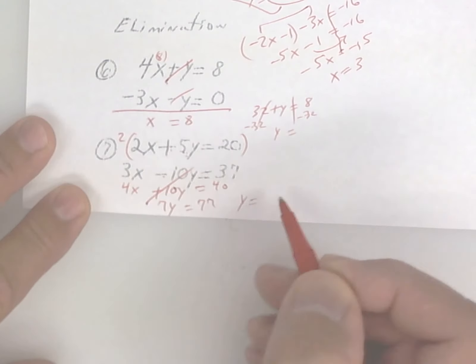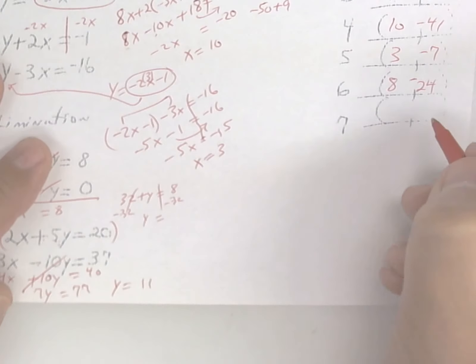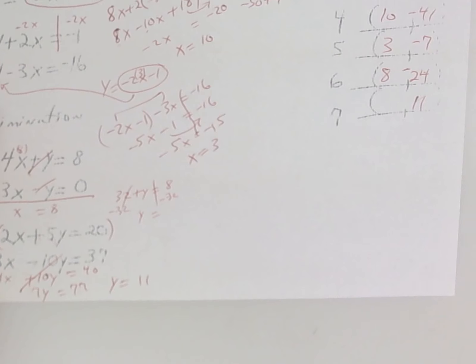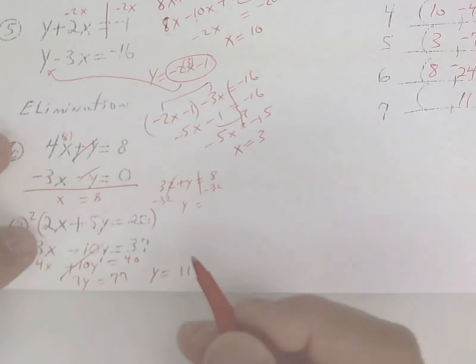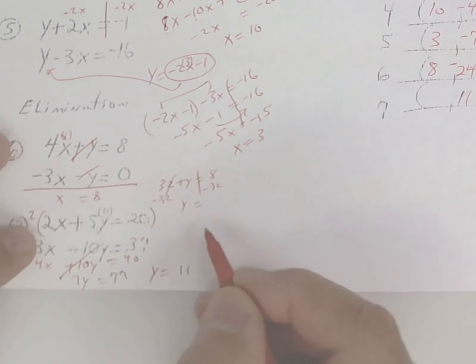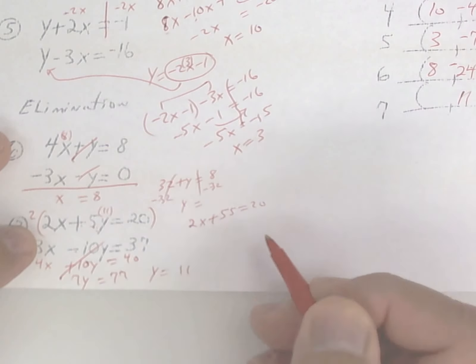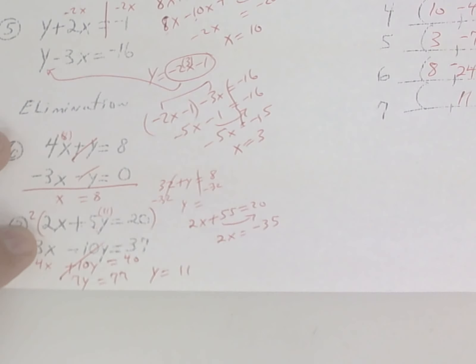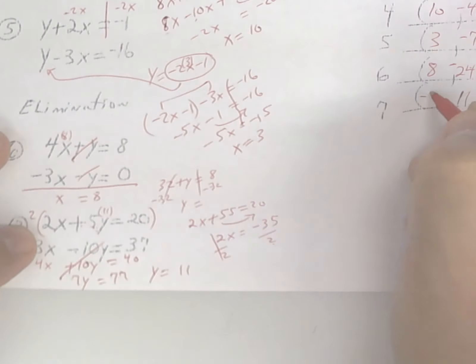Y is equal to 11. So here I put y is equal to 11. And then I pick whichever one I like. I like the top one. So I get 2x plus 55 is equal to 20. Subtract, 2x is equal to a negative 35, I guess it is. And then divide by 2. I guess that's a negative 17.5.